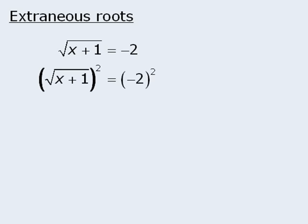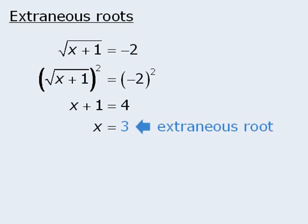When we raise both sides to the power of 2, we get x plus 1 is equal to 4, which means that x must equal 3. So even though we already concluded that the equation cannot have a solution, our technique yielded something that looks like a solution. Since x equals 3 cannot be the solution to this equation, we say that this is an extraneous root.